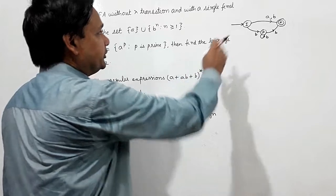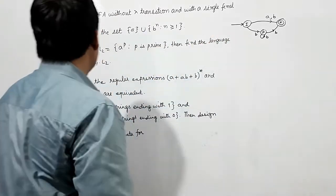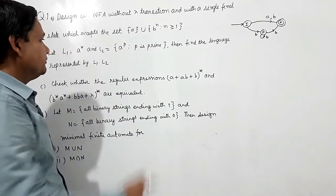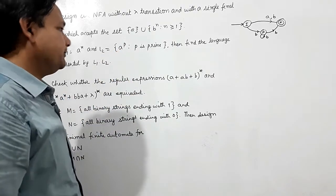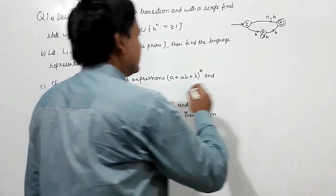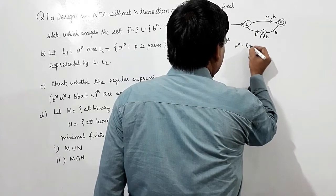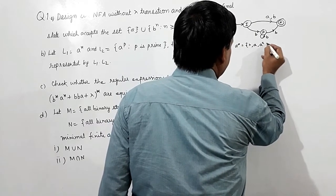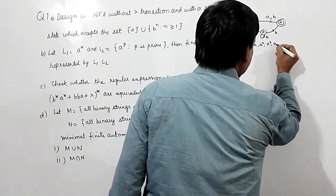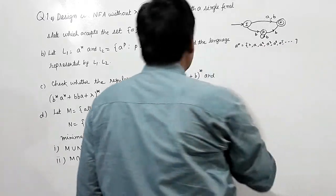This is the required NFA for accepting this set. Now, second part: L1 is a-star and L2 is a to the power p, where p is a prime number. a-star is: lambda, a, a-squared, a-cubed, a-4, a-5, and so on. And a to the power p will be a-squared, a-cubed, a-5, a-7 (since smallest primes are 2, 3, 5, 7...).